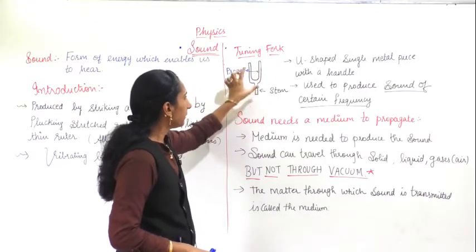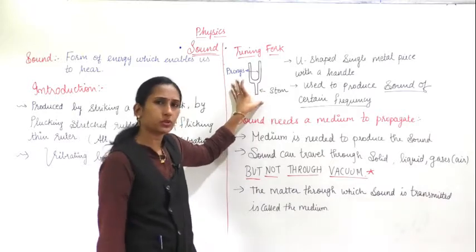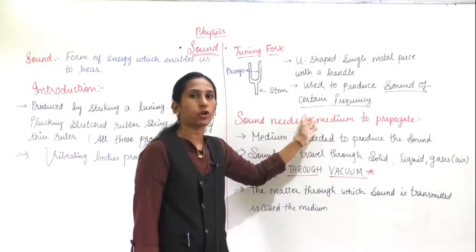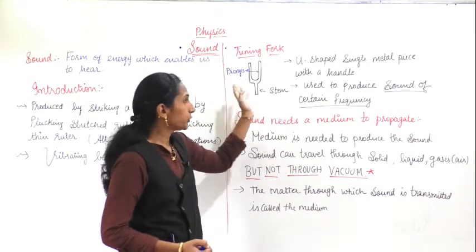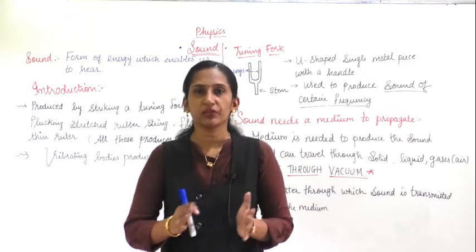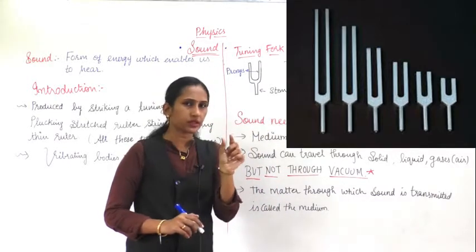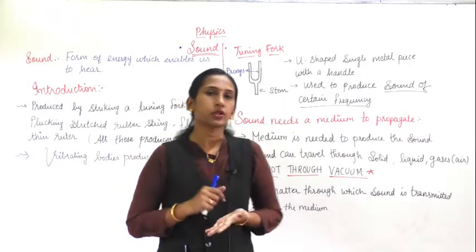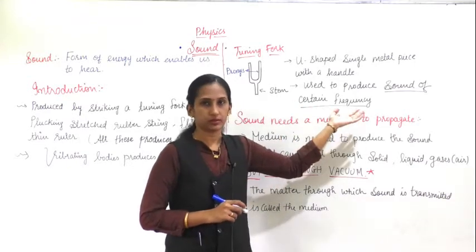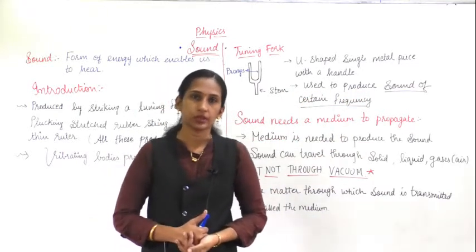Let me explain more about the tuning fork. It is a U-shaped single metal piece with a handle. Its arms are called prongs and the handle is called the stem. It is used to produce sound of a certain frequency. The tuning fork is made to produce different vibrating frequencies. When you want a specific frequency, you use the matching tuning fork, hit it on a rubber pad, and the arms vibrate to produce the desired frequency.